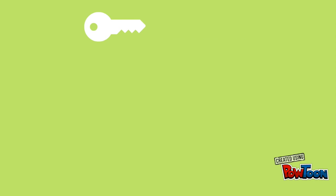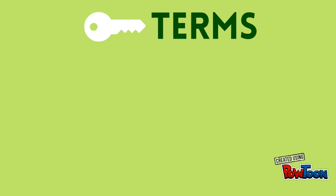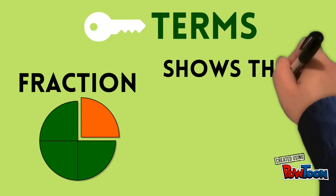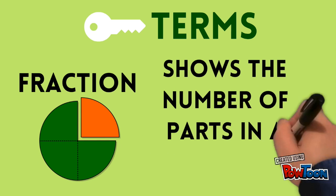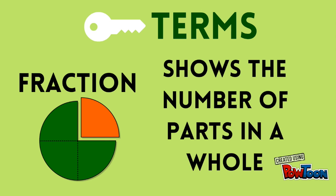Let's begin by reviewing a few key terms we should be familiar with for this unit. First, fraction. A fraction shows the number of parts in a whole. In the fraction shown here, one part is shaded orange. There are a total of four parts in the whole, so the fraction is one-fourth.